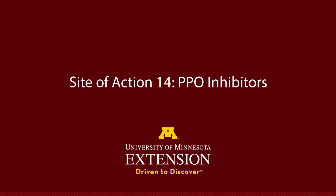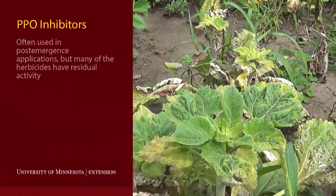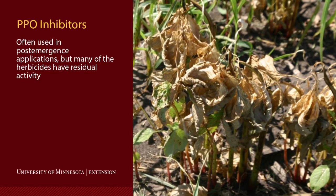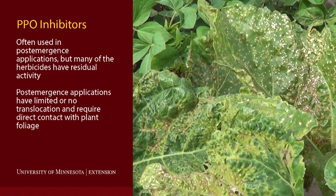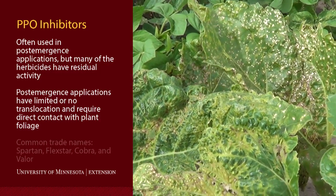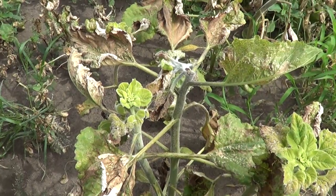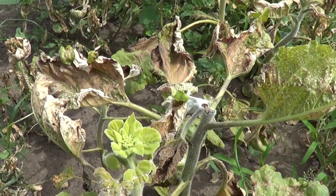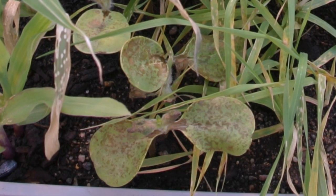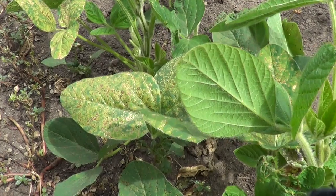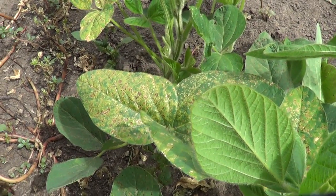Site of action 14 herbicides inhibit protoporphyrin oxidase, also known as PPO, a key step in the production of chlorophyll. As a result of this inhibition, these herbicides generate a great deal of free radicals that disrupt cell membrane structure, and resulting injury is confined to foliage that has come in contact with the herbicide. Affected leaves will become yellow or brown in color and eventually turn necrotic and fall off the plant. Reddish-brown spotting on a leaf surface may appear shortly after herbicide application.